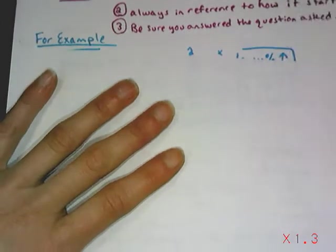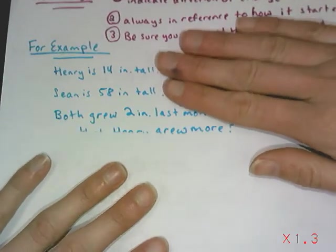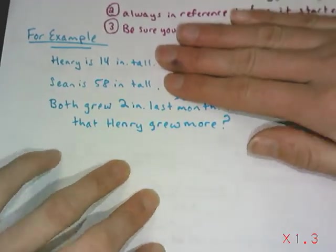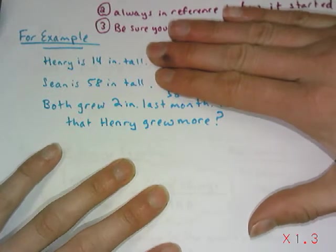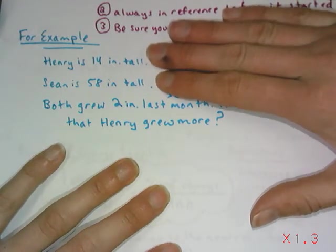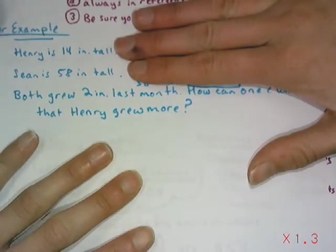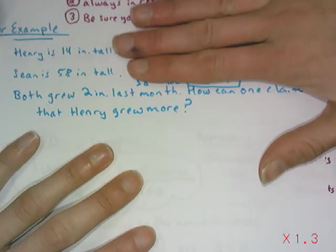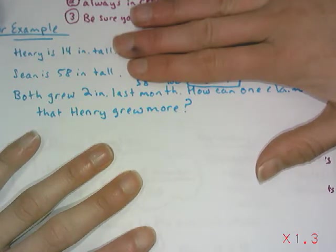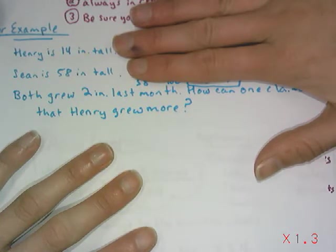For example, I'm going to say we have two brothers. Henry is a baby, only 15 inches tall, and his older brother Sean is 58 inches tall. In the last month, they both grew two inches. I'm going to say that one of these boys actually grew more than the other. How can we possibly claim that if both grew two inches, which seems like the same amount, that one grew more than the other?